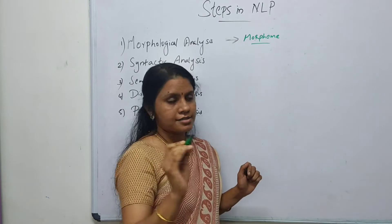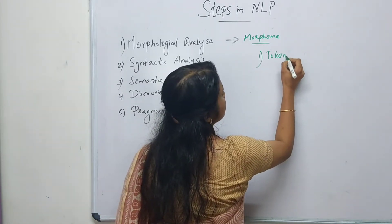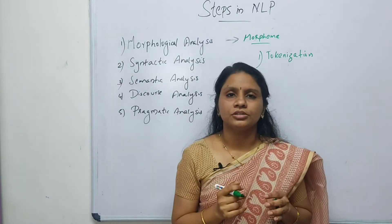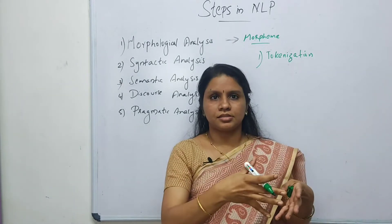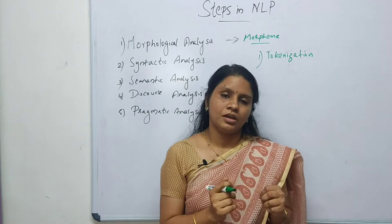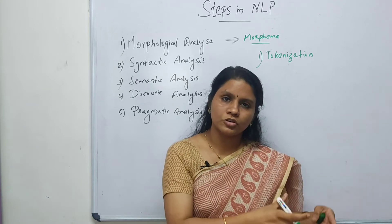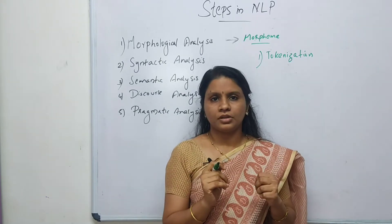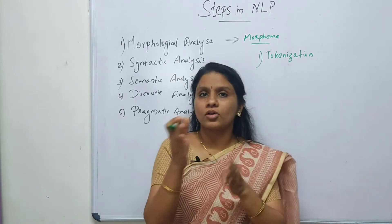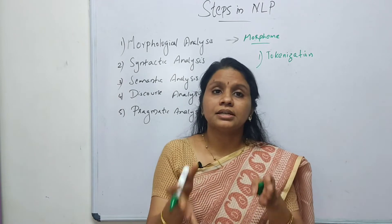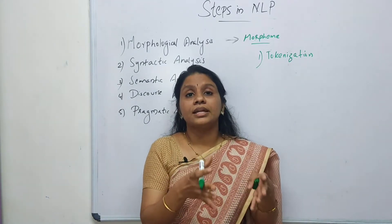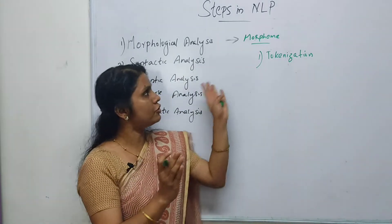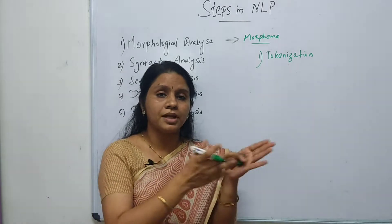In morphological analysis, the first step is tokenization. In tokenization, we split the text into a collection of tokens — words, sentences, or paragraphs. The main aim of tokenization is to integrate the meaning of sentences by analyzing the words, since morphological analysis mainly deals with word-level analysis.